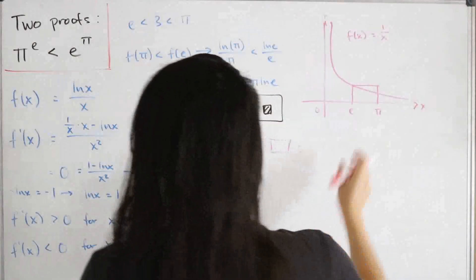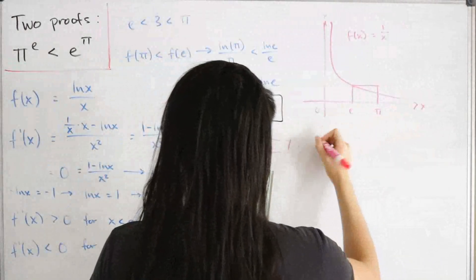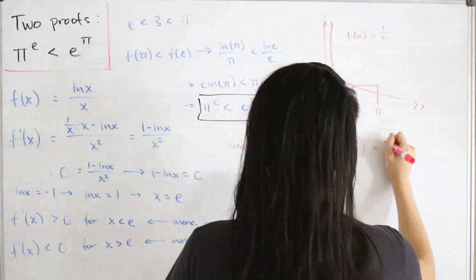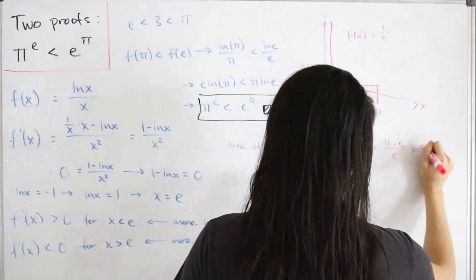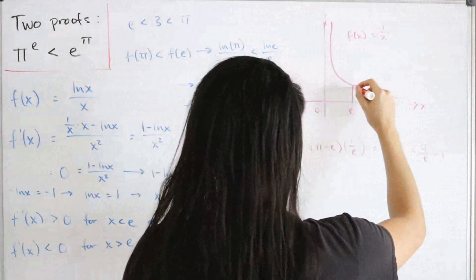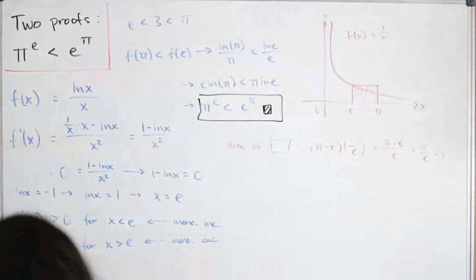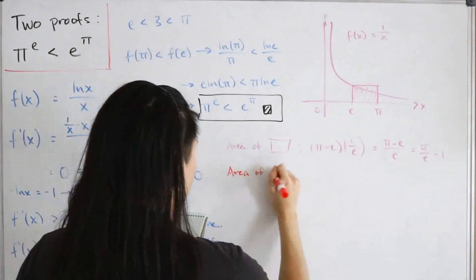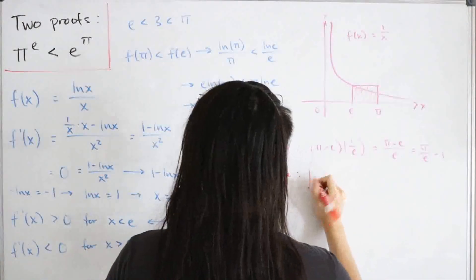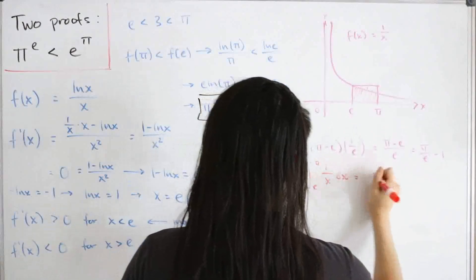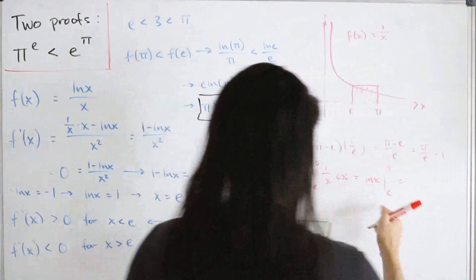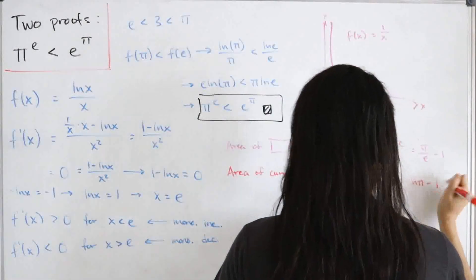The area of that rectangle is its width times its height: (π - e) × (1/e) = (π - e)/e, or equivalently π/e - 1. The area under the curve from e to π is the integral of 1/x dx from e to π, which equals ln(x) evaluated from e to π, giving ln(π) - ln(e) = ln(π) - 1.